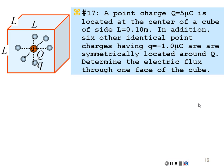Let's try an example. A point charge Q equal to 5 microcoulombs is located at the center of a cube of side length 0.1 meters. In addition, six other point charges each having q equal to negative 1 microcoulomb are symmetrically located around Q. Determine the electric flux through one face of this cube. Everything is symmetric, so there's no reason why one face would have more flux than any other face. If I find the total flux going out of this cube, I can divide by six to find the flux through one face.